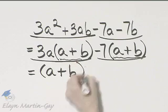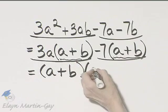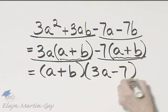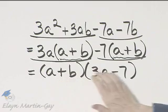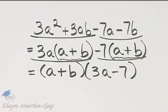So I'm now factoring out the common a plus b. If I take it out of this term, I have left 3a. And if I factor it from this term, I have minus 7. Here's the factorization. Make sure you check by multiplying these two factors to see that we get the original polynomial.